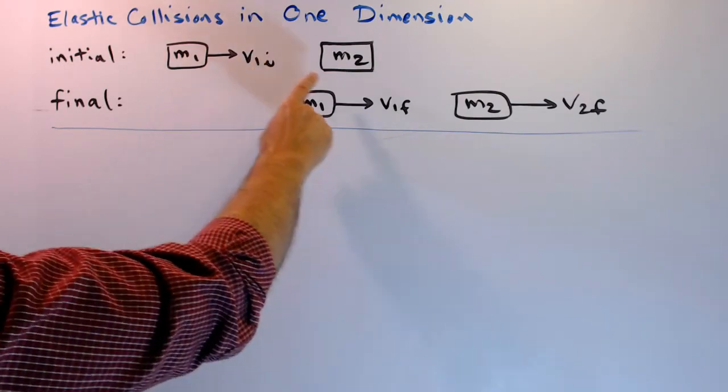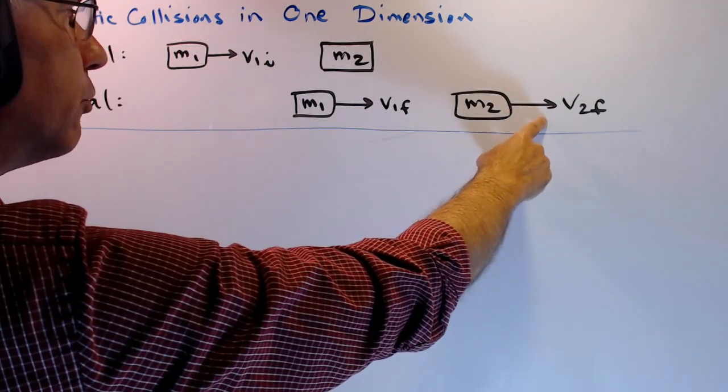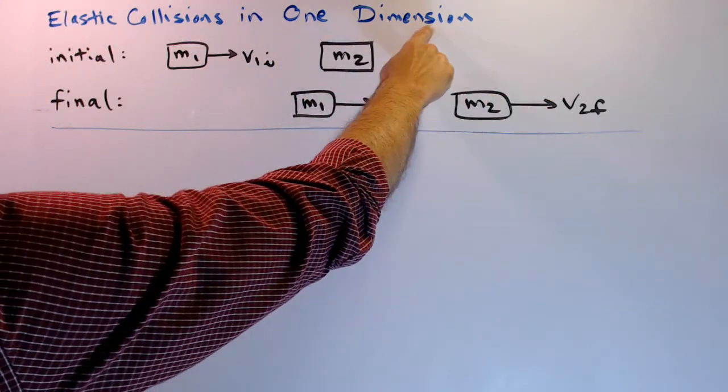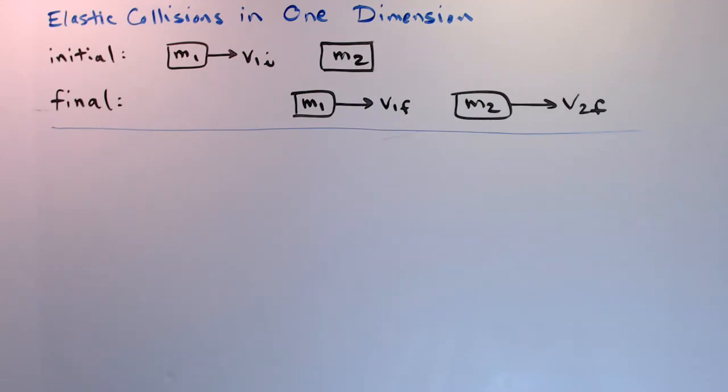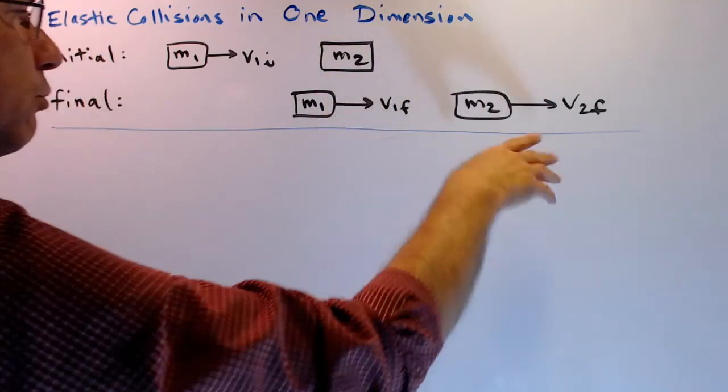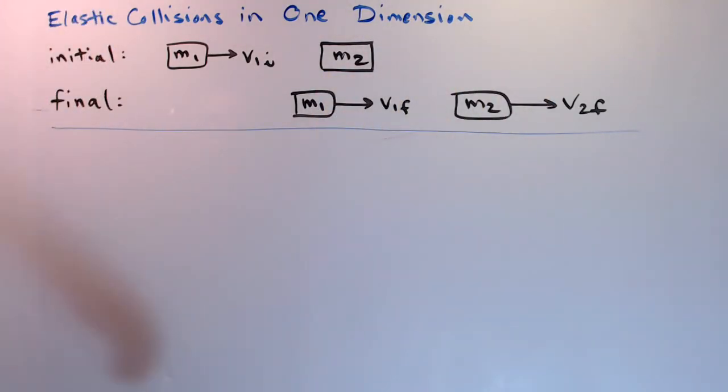If all of these velocity vectors are parallel to one another, we have a collision in one dimension. Typically, in everyday life, a collision is not in one dimension. The masses will veer off in different directions, and then you've got a collision in two dimensions, or three. If that's the case, the math gets more complicated, but the principles are still the same.